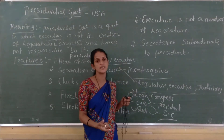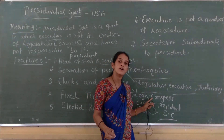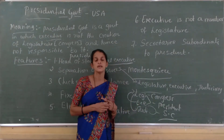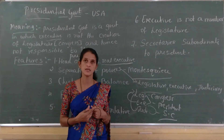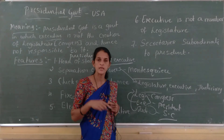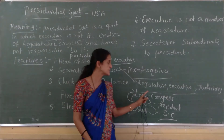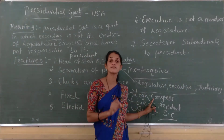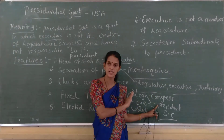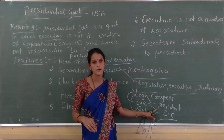All agreements and treaties made by the president require the assent of the congress. If the president makes any agreements or treaties with other countries, those require the approval of congress. Without congress's approval, any such agreements cannot be implemented. In this way, congress checks the power of the president.